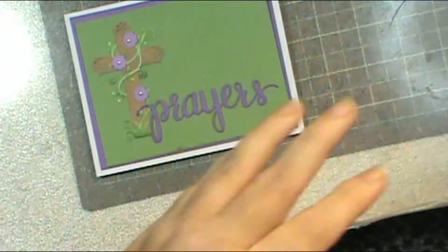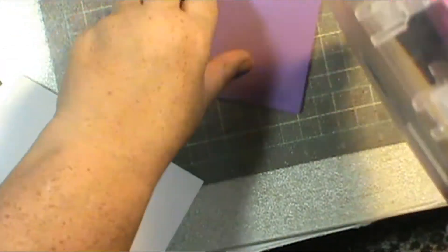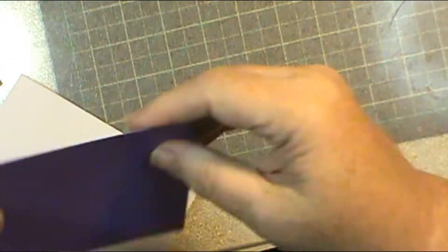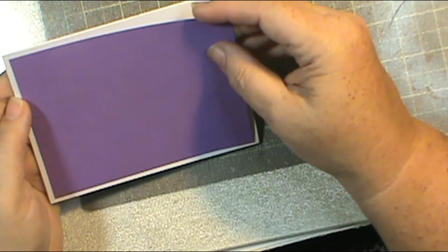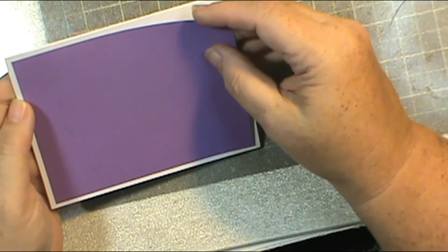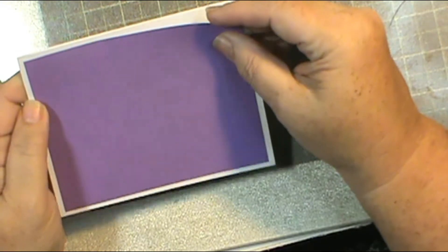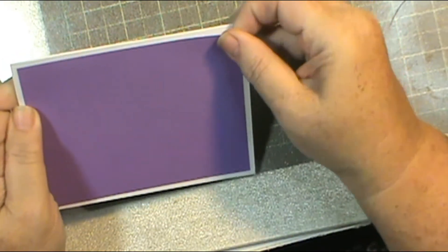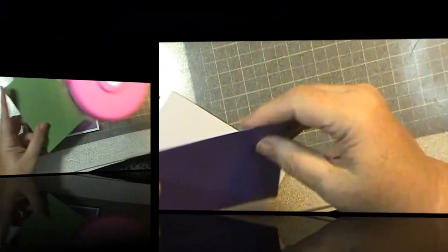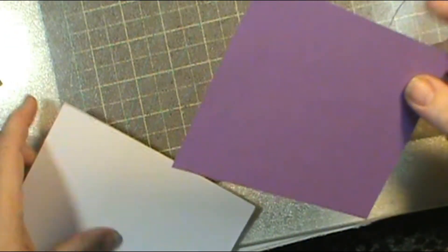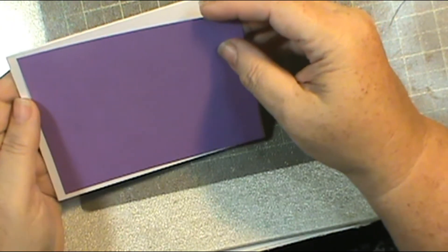I go ahead and get it all layered up. I'm going to get my ATG tape out and get ready to put the layers together on the front of the card and put my purple layer on. I think I've slowed it down. It's going to slow down real slow because I get so proud of myself. Look, I layered it right the first time.